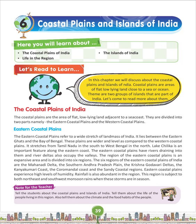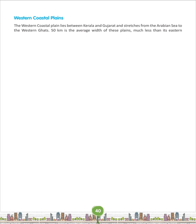The Western Coastal Plains lies between Kerala and Gujarat and stretches from the Arabian Sea to the Western Ghats. 50 km is the average width of these plains, much less than its eastern counterpart. These plains feature plentiful rivers and backwaters which result in forming estuaries. The Gulf of Kutch and the Gulf of Kambad lie on the northern part. The western coastal plains is separated into three major parts.